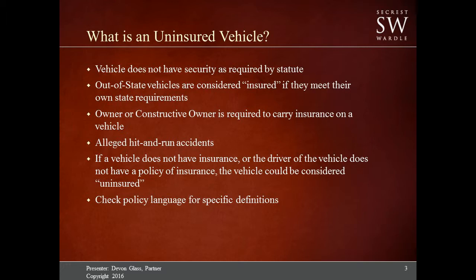The statute in Michigan requires that all vehicles have some sort of security on the vehicle in the event of a motor vehicle accident. Out-of-state vehicles will be considered to have insurance if they meet their own state requirements. So if a vehicle from Florida is involved in an accident in Michigan and they have a minimum policy different than Michigan statute requires — say $10,000 BI coverage when Michigan has a $20,000 minimum — if they meet their state's definition of an insured vehicle, they will be considered insured and meeting the security requirement under MCL 500.3101.